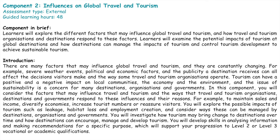Within component two, you will study the influences on global travel and tourism. You will look at how there are many different factors that influence global travel and tourism and how they are constantly changing. For example, we will study things like severe weather events, political and economic factors, and how public perception of a destination can affect the decisions visitors make and the way that travel and tourism organisations operate.